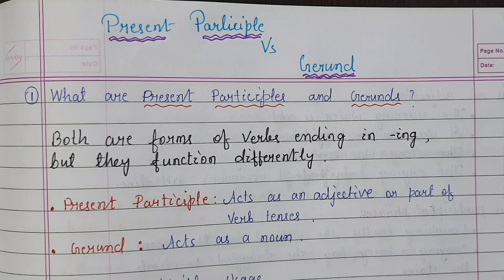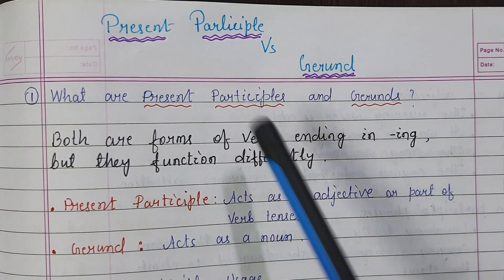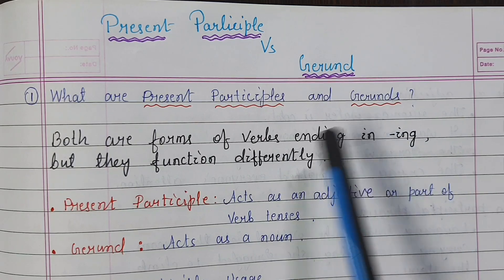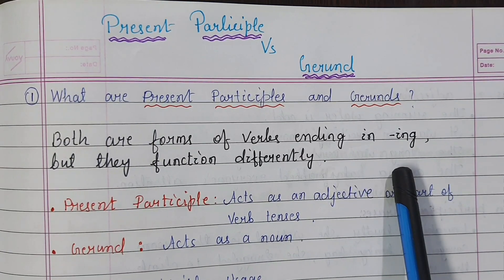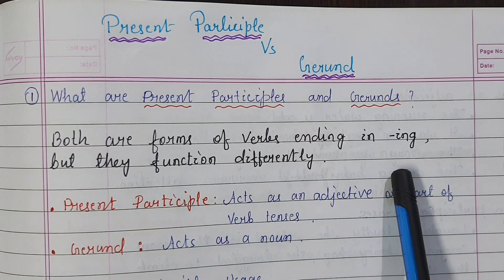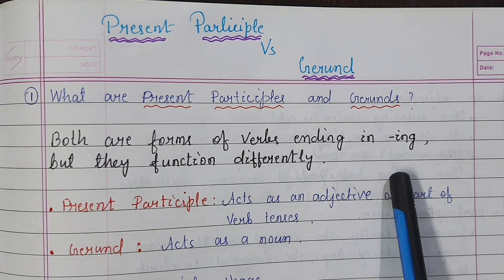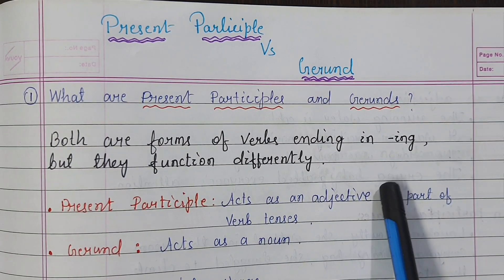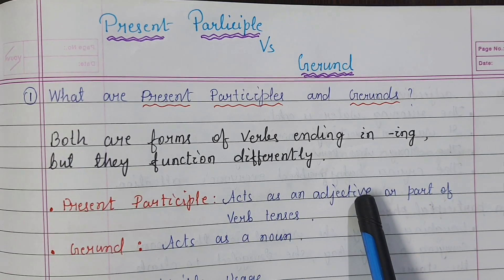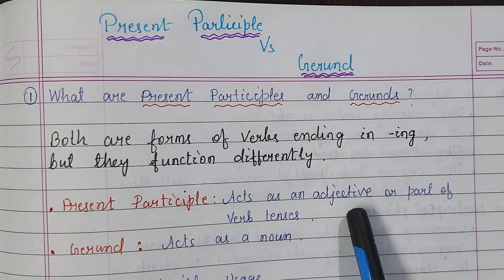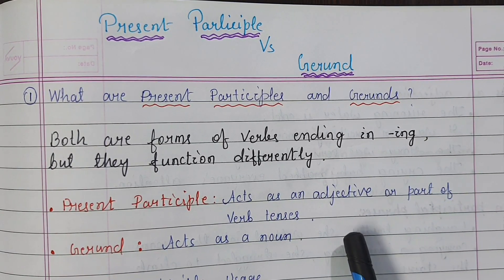In this video, I am going to explain present participle and gerund. What's the difference between both? Both are forms of verbs ending in -ing. That's why you're getting confused. The ing form of a verb can act as an adjective, part of a tense, and also as a gerund.